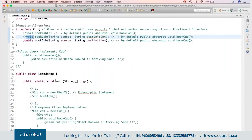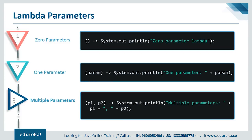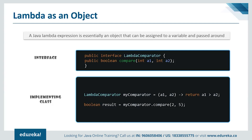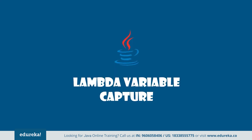We can use a lambda as an object. A Java lambda expression is essentially an object that can be assigned to a variable and passed around. If you have an interface, you can write the lambda expression with a reference — we've been doing exactly that. It's very much equivalent to implementing a class. Now the other part is how variables can be captured in lambda expressions.